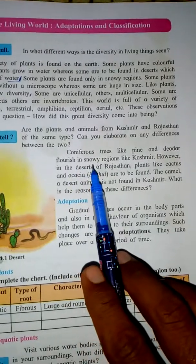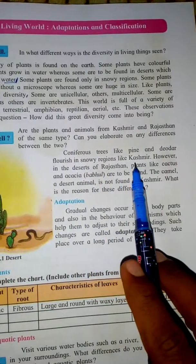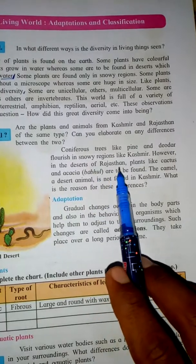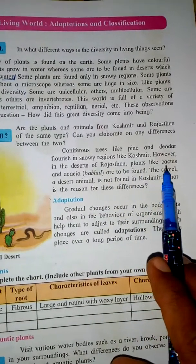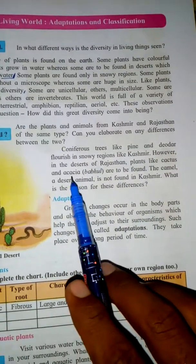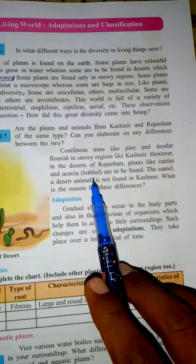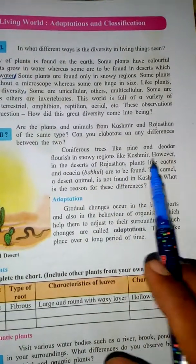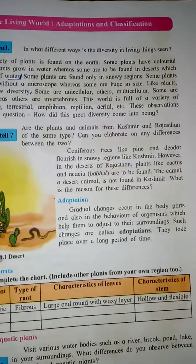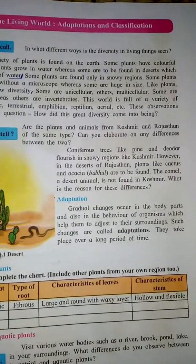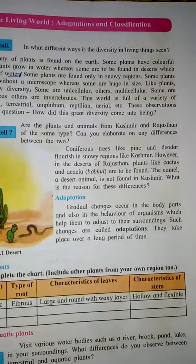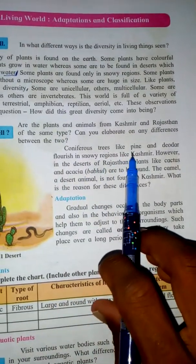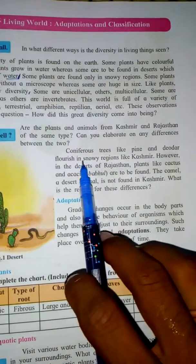Trees like pines and cedar flourish in snowy regions like Kashmir. In the desert of Rajasthan, plants like the cactus and cassia are found. In Kashmir, pine and similar trees — coniferous trees — are found. So in Kashmir, plants like pines and similar trees grow there.